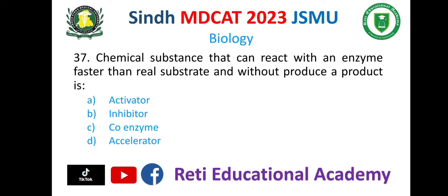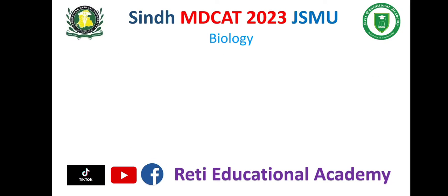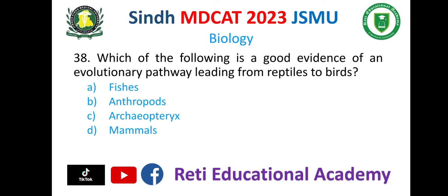Question number 37. A chemical substance that can react with an enzyme faster than the real substrate and without producing a product is: A. Activator, B. Inhibitor, C. Coenzyme, D. Accelerator. The correct option is B. Inhibitor.